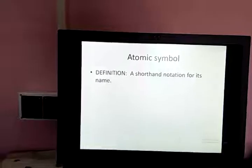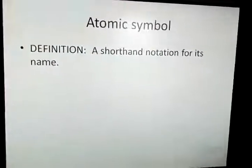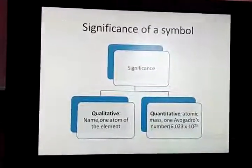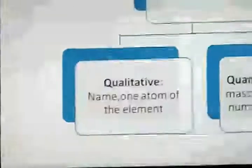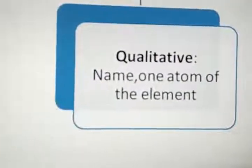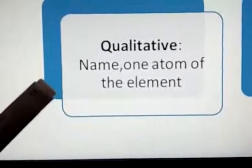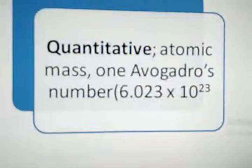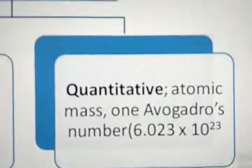The definition of atomic symbol is: it is a shorthand notation for the name of an element. Next, let us talk about the significance of a symbol. There are two kinds: qualitative significance and quantitative significance. Qualitatively, a symbol represents the name of the element and one atom of the element. Quantitatively, it represents the atomic mass, and also one Avogadro's number — that is 6.023 × 10²³.